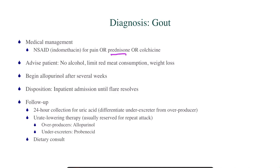When would we want to use prednisone? It can be intraarticular, intramuscular, or oral. We would use prednisone if the patient can't tolerate NSAIDs — for example, if they have peptic ulcer disease — or if the patient has been on an NSAID but it hasn't worked.